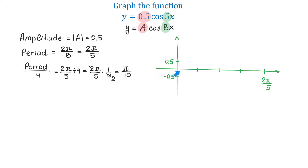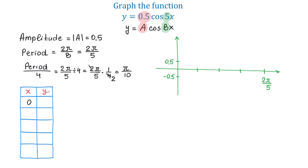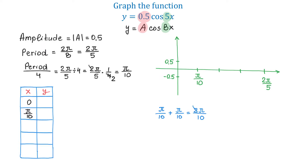Now, we need to find the x-coordinates of the points on the graph. The first x-coordinate is 0. We will add 0 to the table. Because the length of each sub-interval is π over 10, the next x-coordinate will be π over 10. To find the next x-coordinate, we take the previous one and add a quarter period. So π over 10 plus π over 10 equals 2π over 10, and if we divide numerator and denominator by 2, we get π over 5.